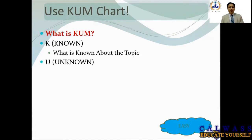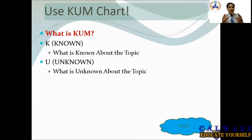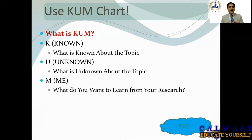The second part of KUM is Unknown — what is unknown about that topic, which is actually the research gap. Which gap are you trying to fill and how would you do it? The third part, M, stands for Me — what do you want to learn from your research and how it will be beneficial for the population for which you are conducting the research. You must first understand what is known, then find the gap to be filled, and then present your own contribution with suggestions or solutions.